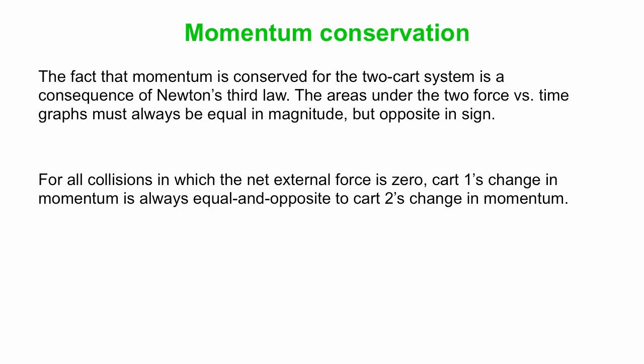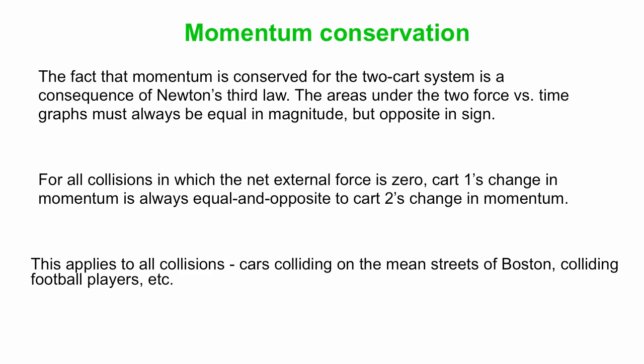Cart one experiences a change of momentum that's equal and opposite to cart two's change of momentum. So when you put the two carts together in one system, the net change of momentum is zero. You can apply this to all sorts of collisions.